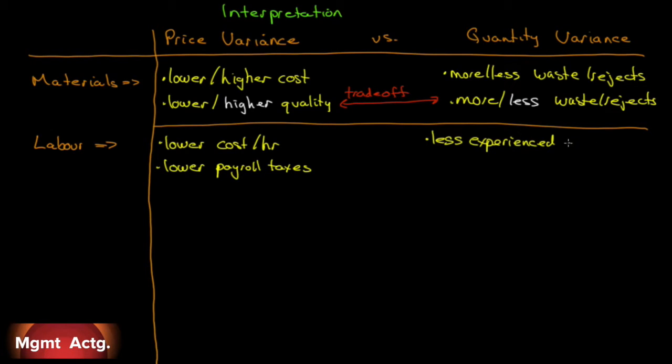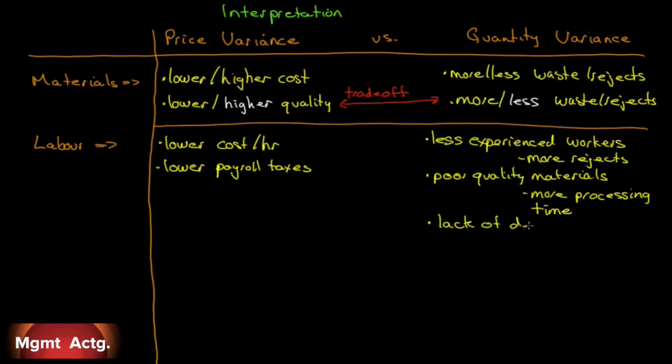A quantity variance could be negative. Less experienced workers, more rejects. It takes them longer to do something. They mess up more often. If we have poor quality material, maybe we don't have more rejects, but it might require more processing time. Or a lack of demand. If the number of units drops significantly, it will look like we have a quantity variance, especially if we don't adjust our labor force to output. That will correspond with an increase in inventory, so that will at least have some clue that that's what the case is.